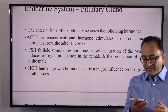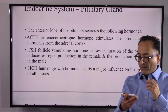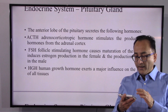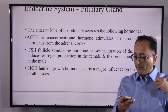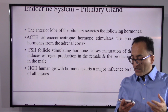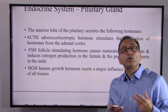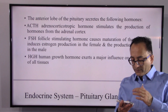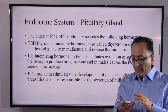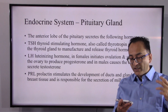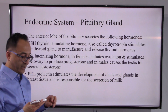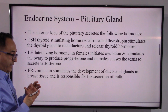The pituitary releases a variety of hormones that each do specific things in our body. For example, ACTH drives hormone production from the adrenal cortex. FSH leads to maturation of the ovum and production of estrogen in females, and sperm in males. Human growth hormone influences the growth of all tissues.